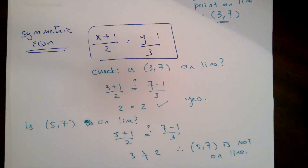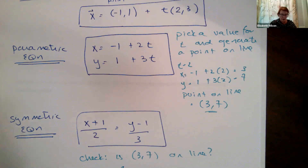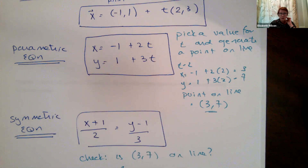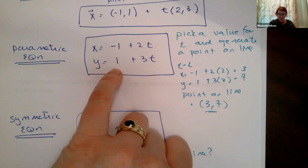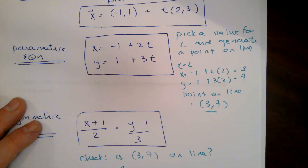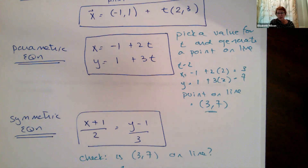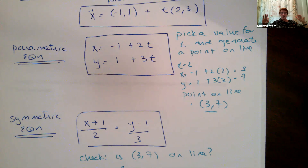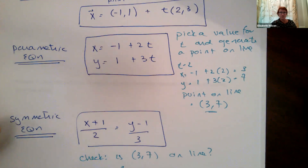What if you pick t equals 0? Since t is all real numbers, you can pick any value. With t equals 0: x equals minus 1 plus 0 is minus 1, and y equals 1 plus 0 is 1. So minus 1, 1 is a point on that line — which was our original point. You can imagine a computer program looping through t values from minus 100 to positive 100, generating x and y coordinates and plotting dots to build up the line.